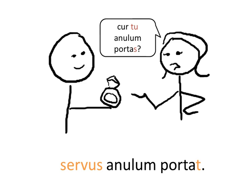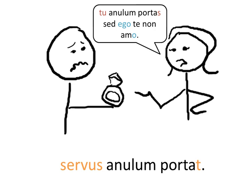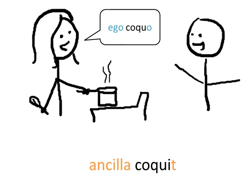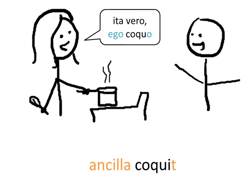Again: tu portas. Notice that at the bottom we have servus portat, and ego porto, and ego amo — the poor guy wasted energy because she does not amat him. Tu portas, ancilla coquit. Notice the subject — we have a subject as a thing. We have the pronoun ego, meaning I, then we end with coquo. And we have the pronoun tu, meaning you, we end with coquis.